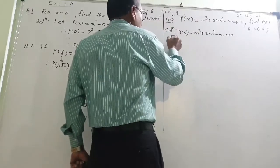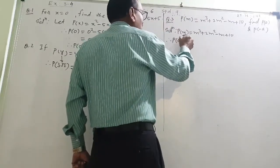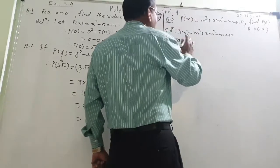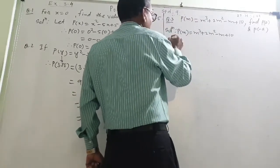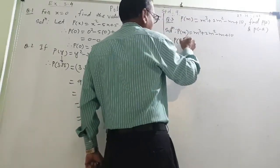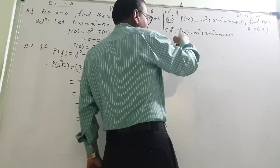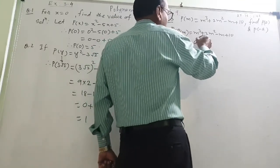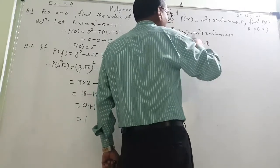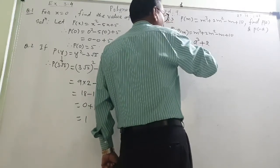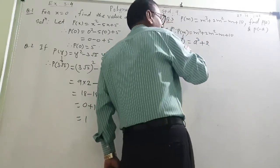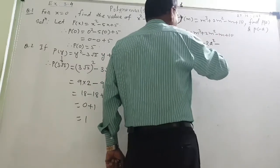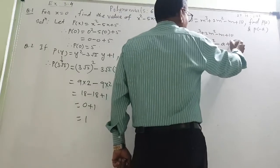Therefore, first answer: I want p of a. At the place of m, I am putting a. So p of a is equal to a cube plus 2 into a square minus a plus 10.